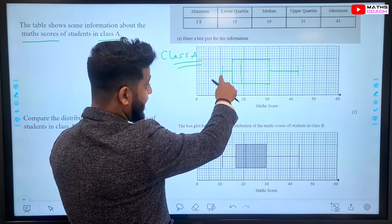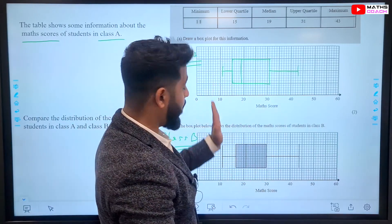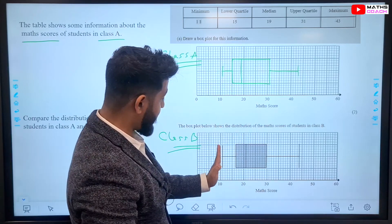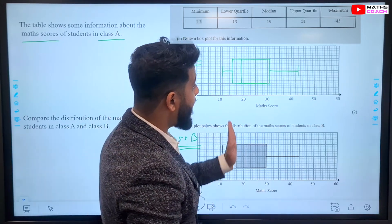Also, you can notice that the minimum points, the lowest values, the lowest score in both Class A and Class B are exactly the same, which was 11. However,